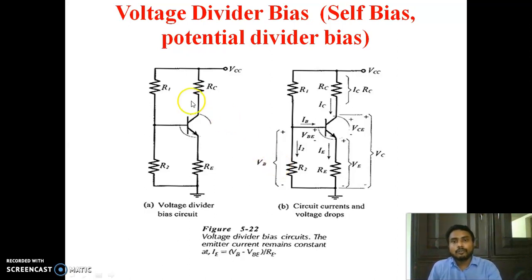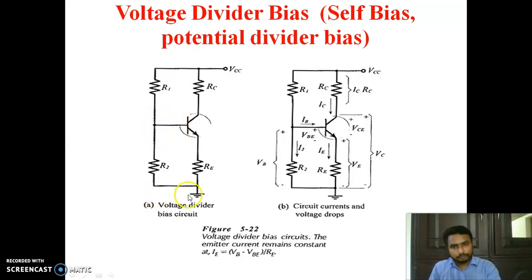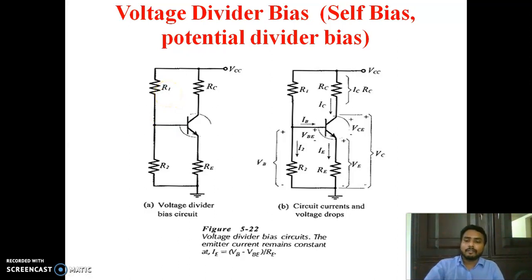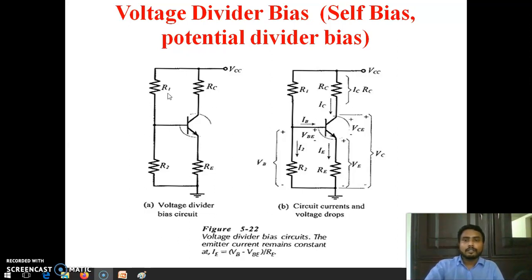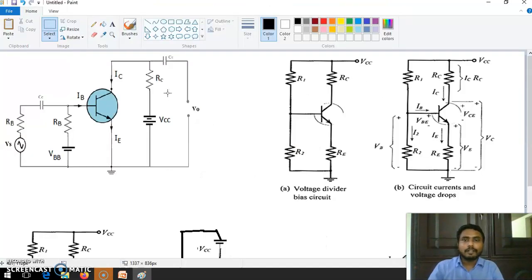It is actually composed of four resistors. For the collector RC, emitter RE — these two resistors are there. To the base, from the supply R1, and from the base to ground R2. By the combination of these four resistors we are forming voltage divider bias. Actually, the voltage divider bias has the same diagram as what we have seen here.